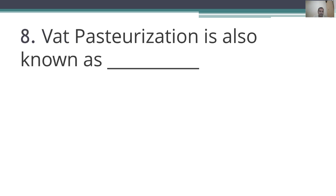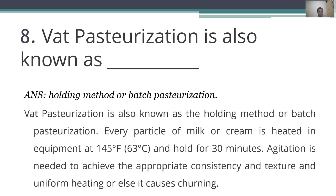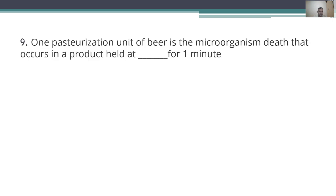Eighth question: wet pasteurization is also known as the holding method or batch pasteurization. Every particle of milk or cream is heated at 145°F (63°C) and held for 30 minutes. Agitation is needed to achieve appropriate consistency and uniform heating; otherwise it causes churning.